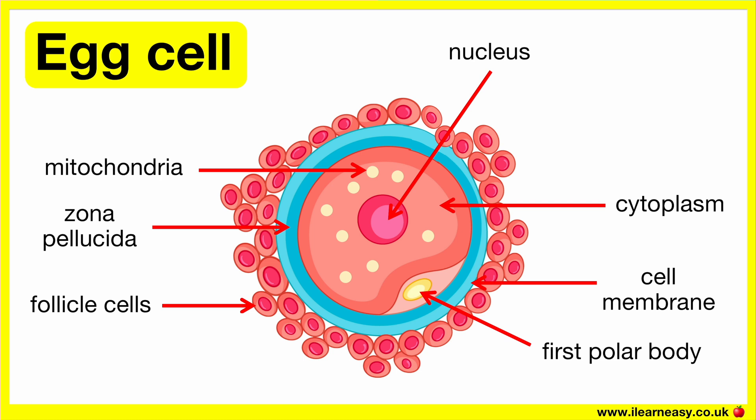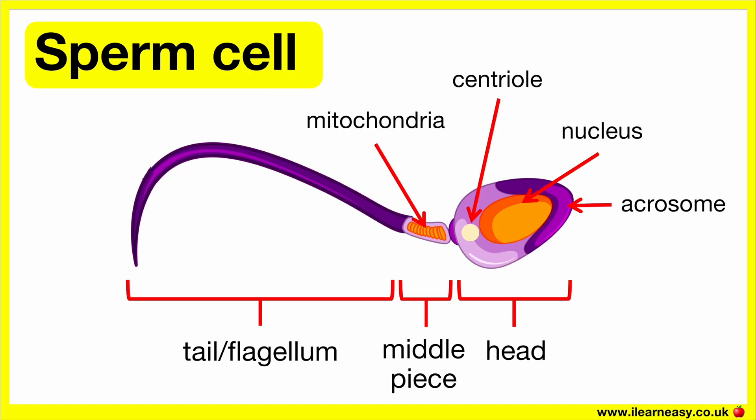The follicle cells surrounding the egg cell provide nutritional support, secrete hormones, and help to regulate the maturation and release of the egg during ovulation. The first polar body is a by-product of meiosis, which contains excess genetic material and is discarded to ensure the egg has the correct chromosome number for fertilisation.